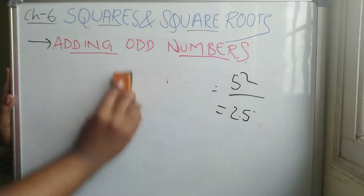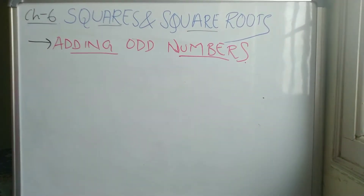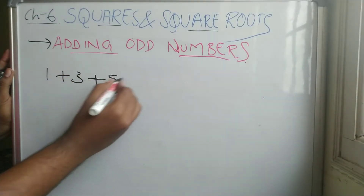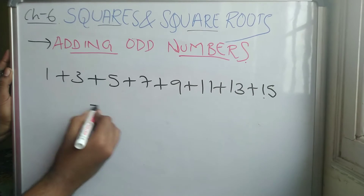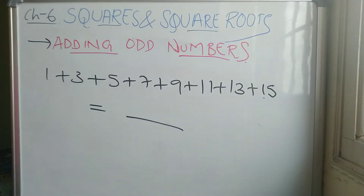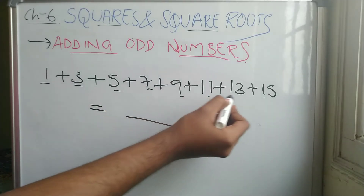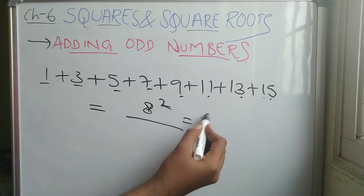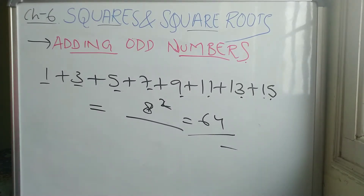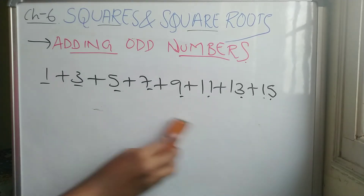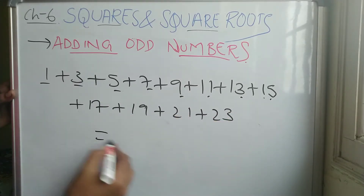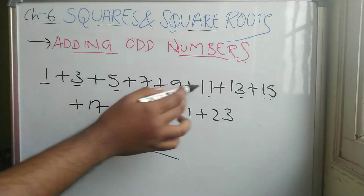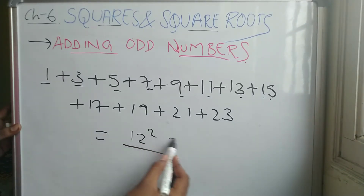All right, simple! Let's take one more example: one plus three plus five plus seven plus nine plus eleven plus thirteen plus fifteen equals what? Count the numbers: one, two, three, four, five, six, seven, eight — eight numbers. So eight squared... actually, count again: twelve numbers, so twelve squared is 144. That's the answer.